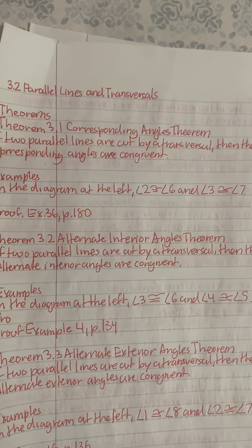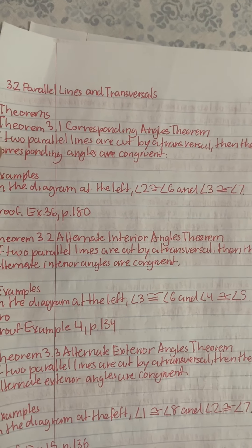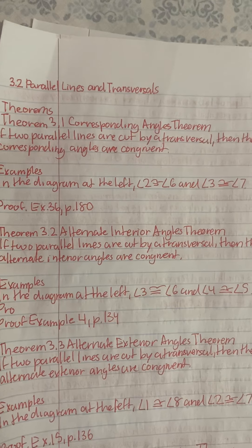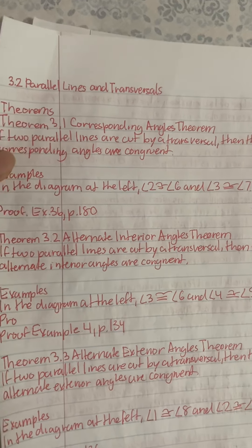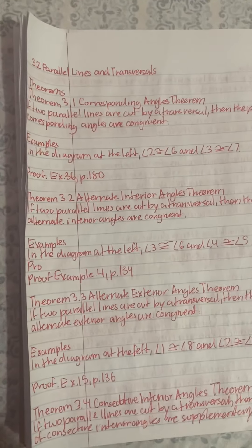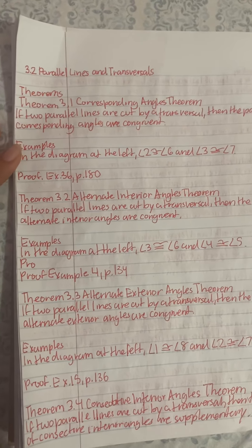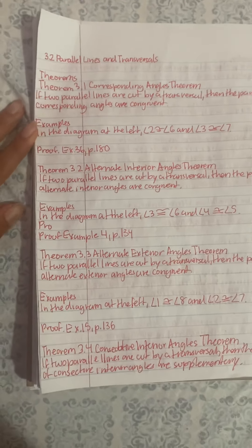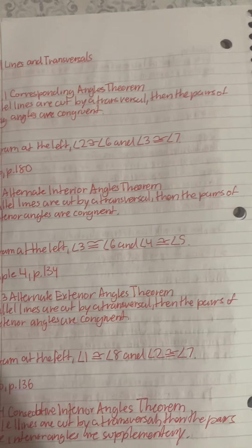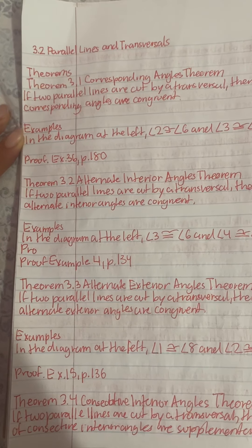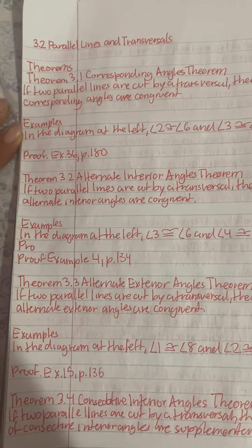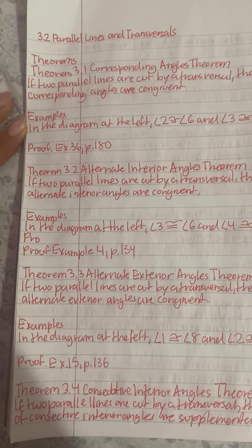Proof. Example: 36P180. Theorem 3.2, Alternate Interior Angles Theorem: If two parallel lines are cut by a transversal, then the pairs of alternate interior angles are congruent. Example: In the diagram at the left, angle 3 is equal to angle 6, and angle 4 is equal to angle 5. Proof. Example: 4P134.